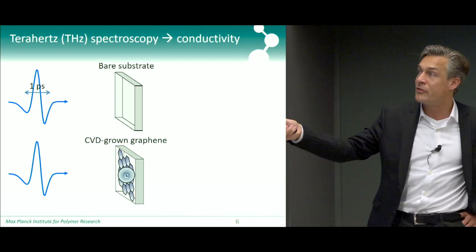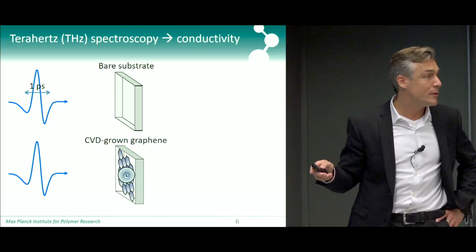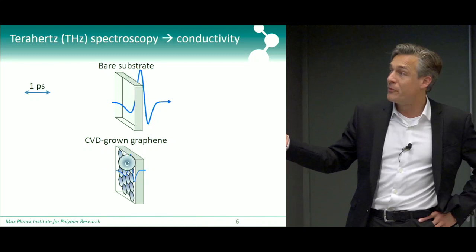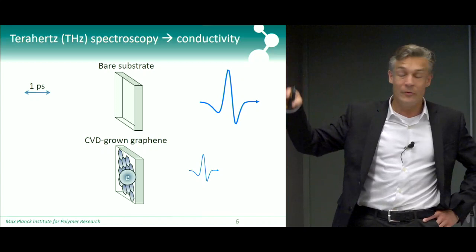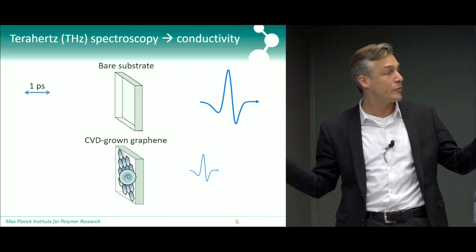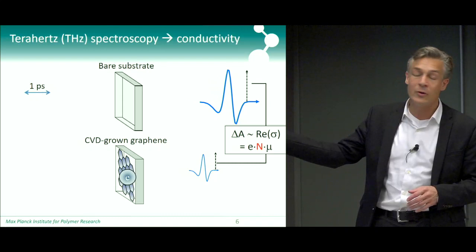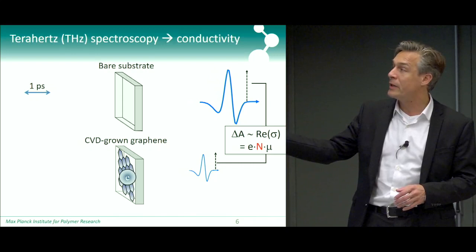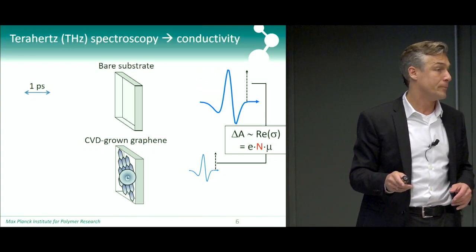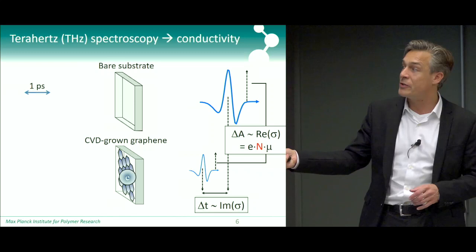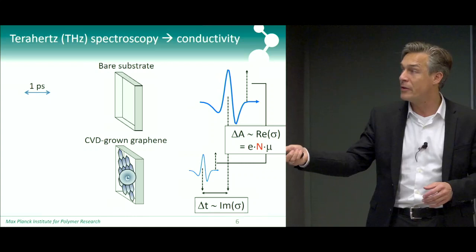In a terahertz experiment, we compare a terahertz pulse going through a bare substrate versus through CVD-grown graphene on a substrate, which has a sheet of electrons in it. One pulse doesn't do anything; the other accelerates the electrons in the material, causing a reduction in amplitude and a phase shift of the pulse. That reduction in amplitude is a direct measure of the real conductivity of the material — a product of carrier number and mobility — while the phase shift measures the imaginary conductivity or polarizability induced by free electrons.